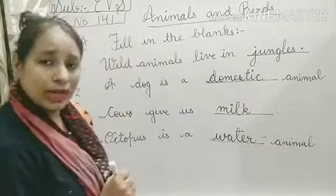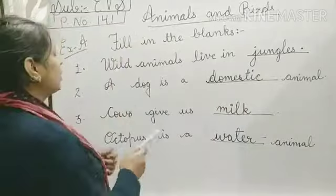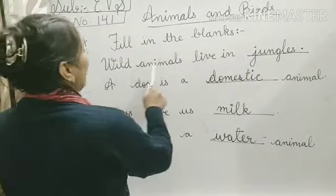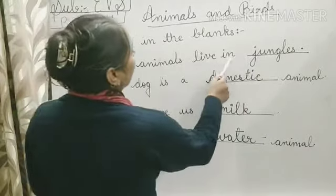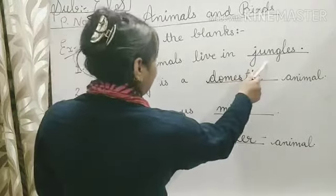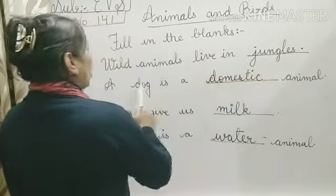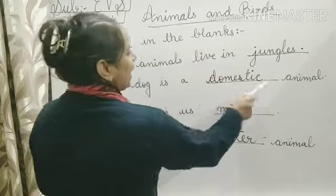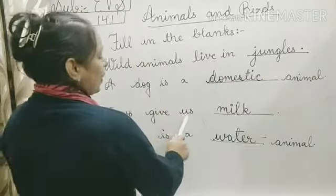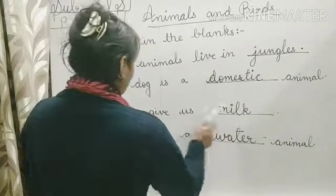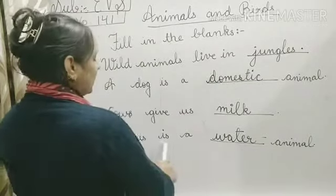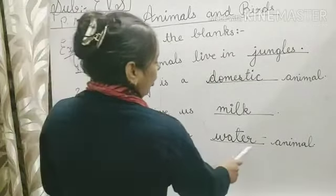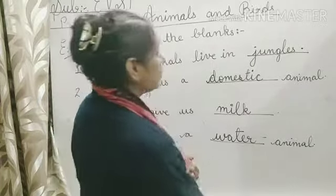I'm explaining you once again, students. Wild animals live in jungles. A dog is a domestic animal. Cows give us milk. Octopus is a water animal.